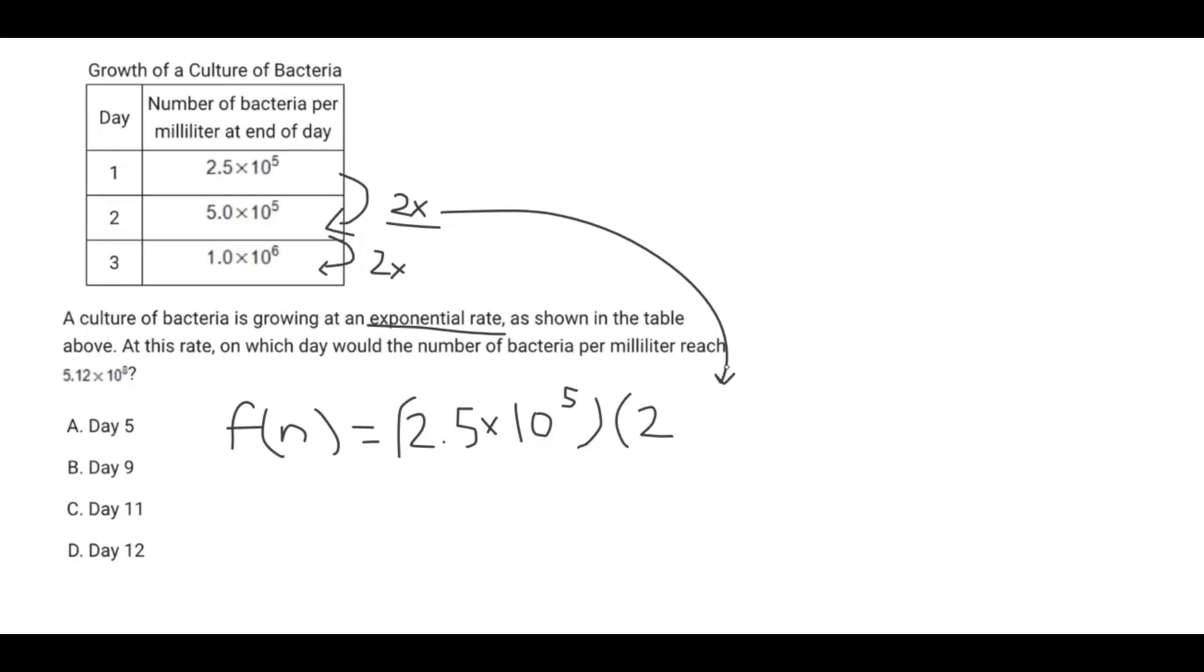And now this has to be raised to the power of n, the number of days, right? But something you'll find is we can't just leave it like that, because if n equals 1, we're going to get 2 to the power of 1, and 2 times 2.5 times 10 to the power of 5 is not the same thing as 2.5 times 10 to the power of 5. That would instead give us the value for day 2.